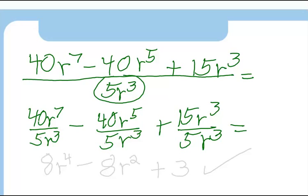Now just work each fraction separately. 5 goes into 40 eight times, r to the 7th over r to the 3rd is r to the 4th. Minus 5 goes into 40 eight times, and r to the 5th over r to the 3rd is r to the 5th minus 3rd, which is r to the 2nd or r squared.